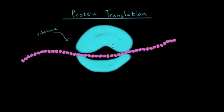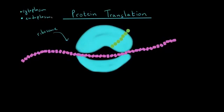The ribosome is going to put together the corresponding chain of amino acids known as a polypeptide. Ribosomes are found in the cytoplasm of the cell, and they're also found in a different organelle called the endoplasmic reticulum. There are two types of endoplasmic reticulum: the smooth endoplasmic reticulum and the rough endoplasmic reticulum. Ribosomes are found in the rough endoplasmic reticulum. As you can see in the picture, the ribosome is made up of two units — a larger one and a smaller one.